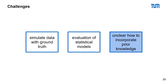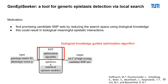Let's focus on the last of our challenges: how can we find SNP sets of variable length in a reasonable time and how we think we can incorporate prior knowledge? For this, we developed GenEP Seeker, a yet unpublished tool for generic epistasis detection via local search.